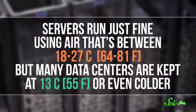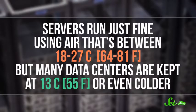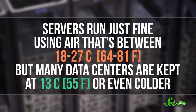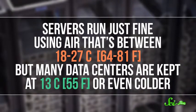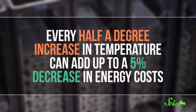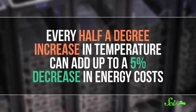You can also cut the amount of electricity that air conditioning uses by actually raising the temperature. Servers run just fine using air that's between 18 and 27 degrees, but many data centers are kept at 13 degrees or even colder. Every half a degree increase in temperature can add up to a 5% decrease in energy costs. So while a 27 degree room might be a little toasty for some people, there's no reason we can't just raise the temperature in the room and save a lot of energy.